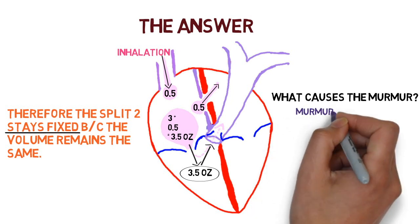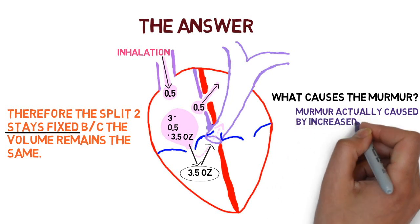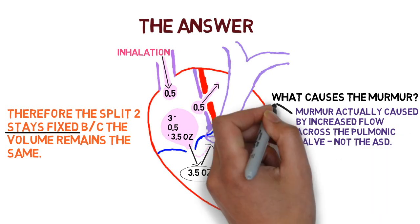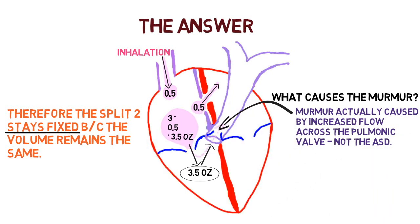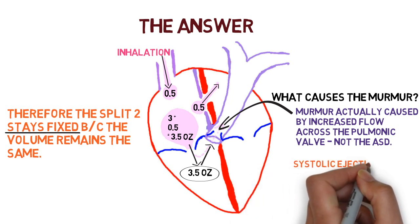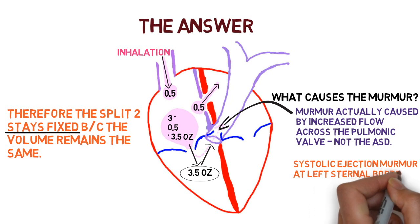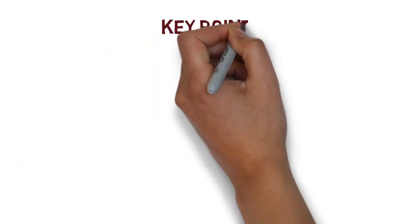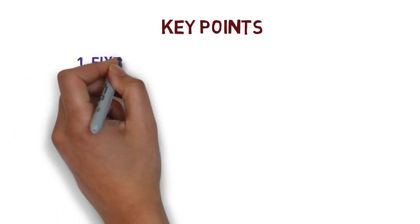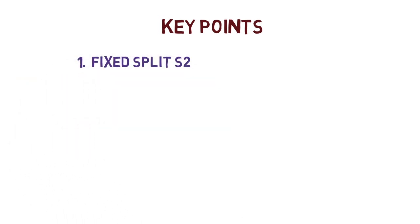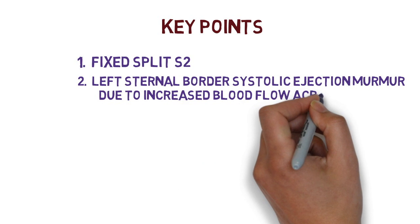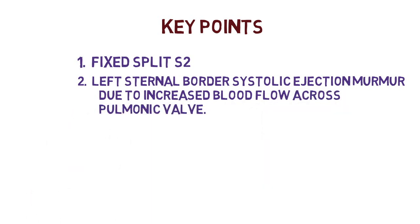What actually causes the murmur with an atrial septal defect? The murmur is caused by increased flow across the pulmonic valve — not the ASD itself. This causes a systolic ejection murmur at the left sternal border in the pulmonic area. To review the key points for a secundum ASD: number one, we hear a fixed split S2; number two, a left sternal border systolic ejection murmur due to increased blood flow across the pulmonic valve.